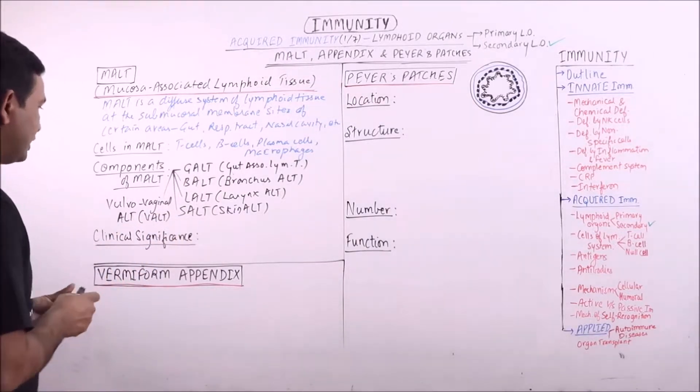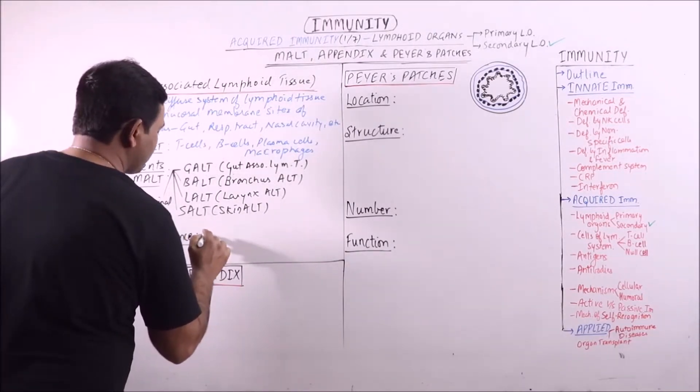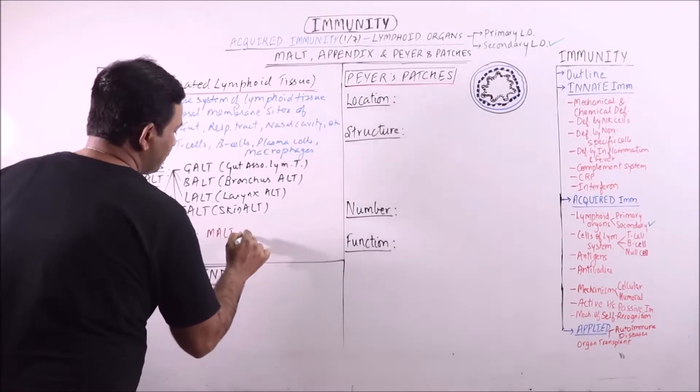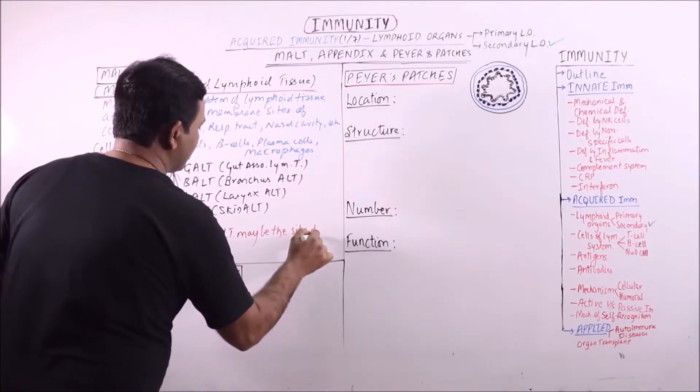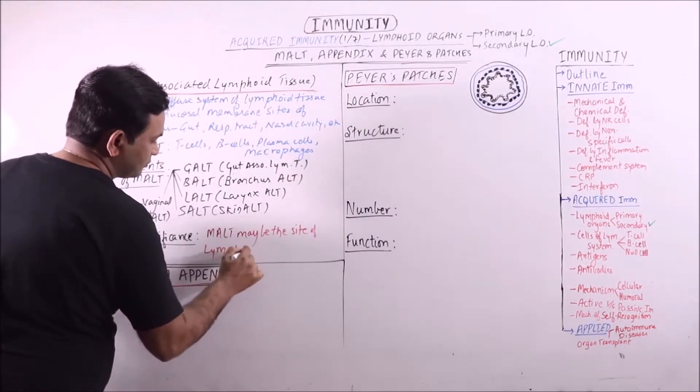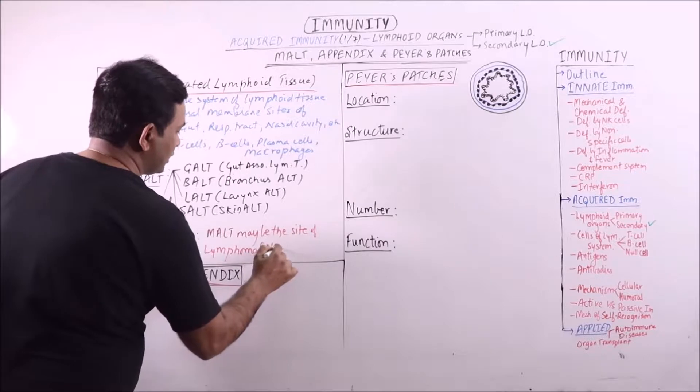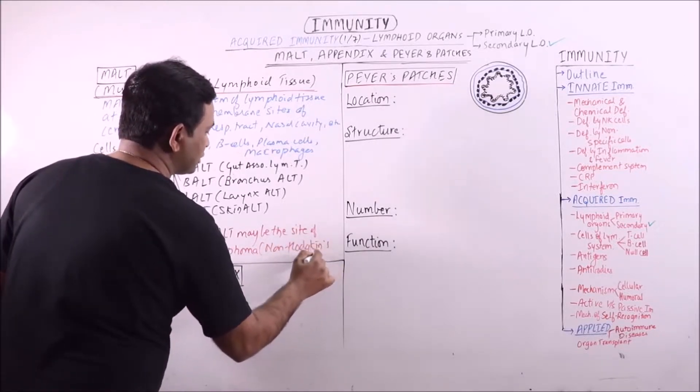Now the clinical significance. Clinical significance is that MALT may be the site of lymphoma, usually non-Hodgkin's type.